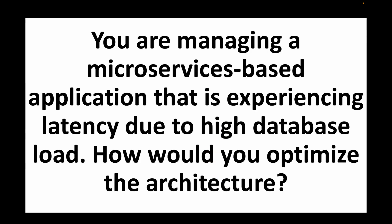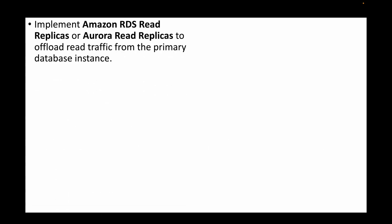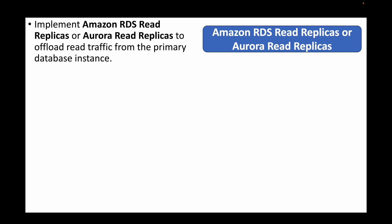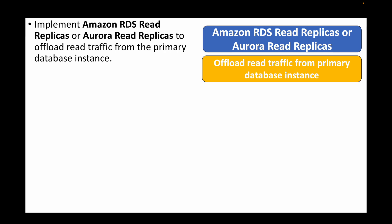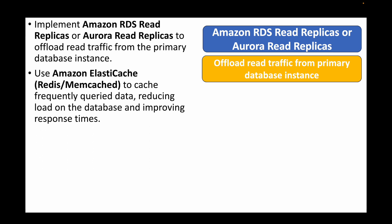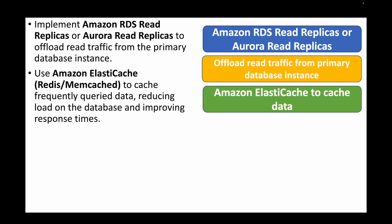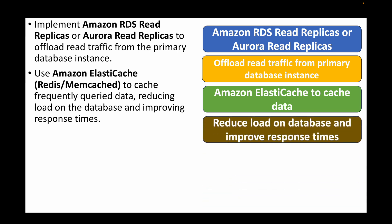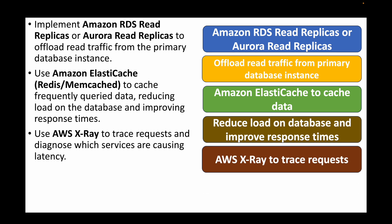The next question is: you're managing a microservices-based application experiencing latency due to high database load — how would you optimize the architecture? We can implement read replicas in Amazon RDS or Aurora, sending read queries to the replicas instead of the primary database to offload traffic. We can also use Amazon ElastiCache to cache frequently queried data, reducing load on the primary database and improving query response times. AWS X-Ray can be used to trace requests and diagnose which services are causing the latency.